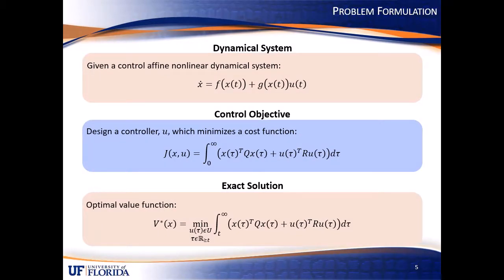Before I go into the switched aspect of this paper, I'll lay out the general ADP problem formulation. So if we're given a control-affine non-linear dynamical system, x dot equals f of x plus g of x times u, our objective is to design a controller that minimizes the infinite horizon cost function J, which is the integral from zero to infinity of a quadratic cost in the states and control effort.